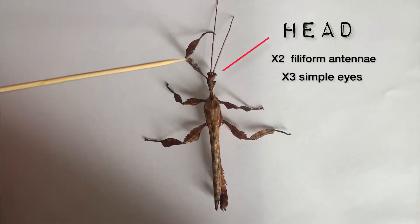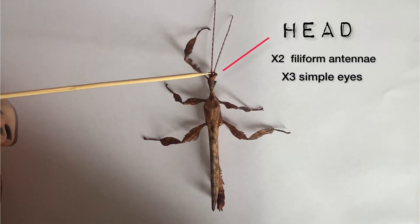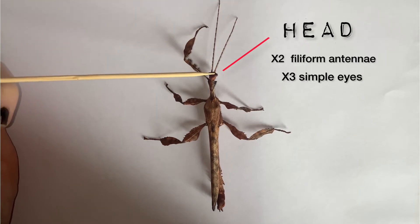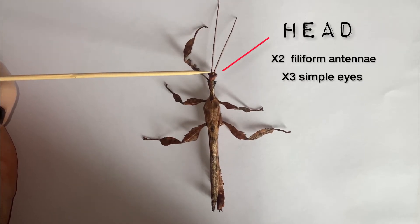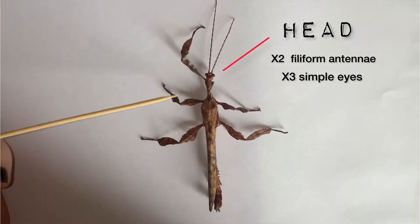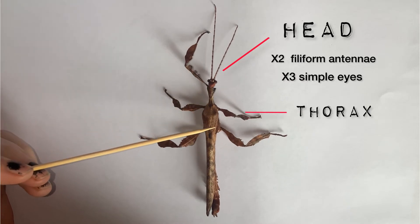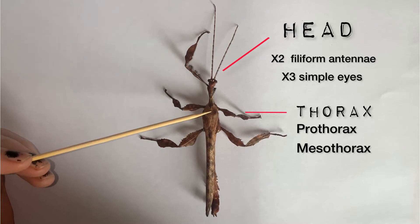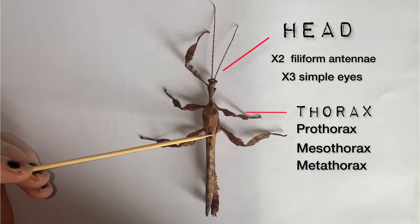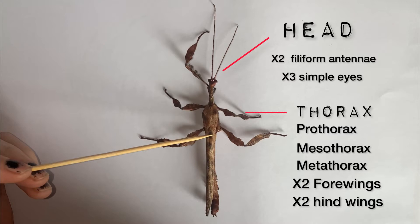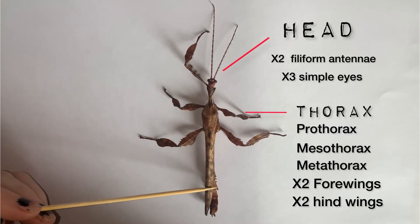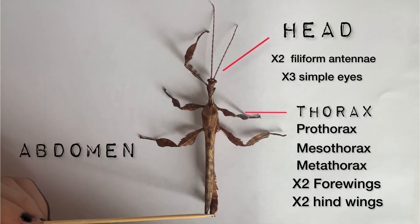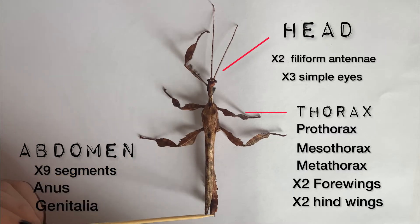Starting from the top and making our way down, we have the head which features two filiform antennae and three simple eyes. We are currently only looking at the dorsal structures, so we'll talk about the mouth parts and compound eyes later on. After the head we have the thorax, separated into three parts: the prothorax, the mesothorax, and the metathorax, which includes the fore and hind wings. Moving further down the insect we also have the abdomen, which is separated into nine segments and includes the anus and genitalia.